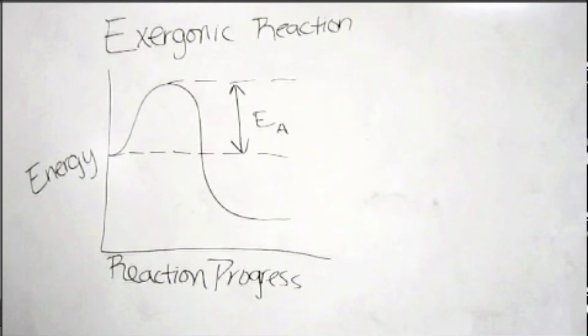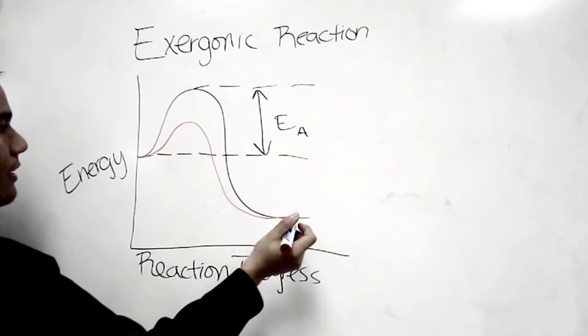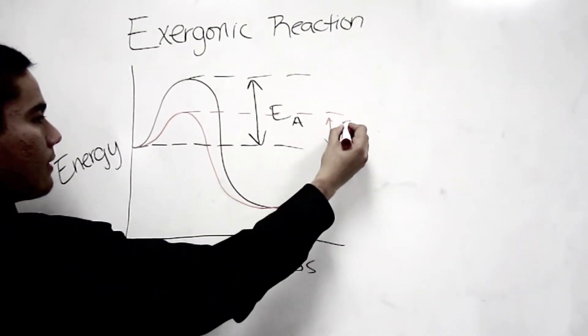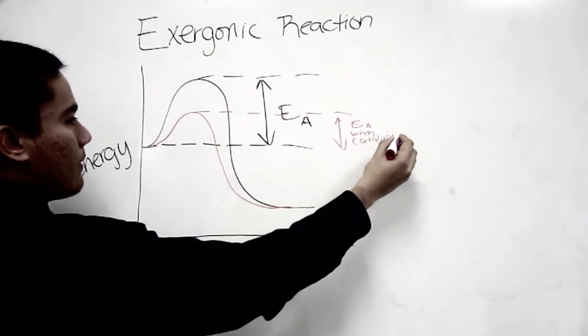One way nature has found to overcome this barrier is by using catalysts. Catalysts lower the energy of activation, thus speeding up the reaction. Catalysts are not used up in the reaction and do not make the reaction spontaneous. Instead, they are used in the reaction and leave once the activation energy is overcome.